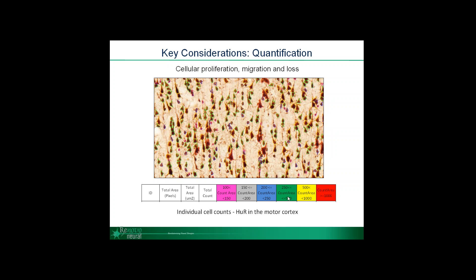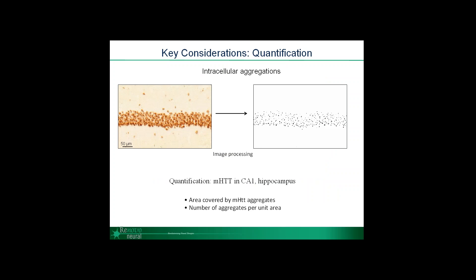What bin of cells is used for the analysis really depends on the questions being asked. On a cellular level, one of the pathophysiological hallmarks of many neurodegenerative diseases are intracellular aggregations, such as demonstrated in this example of huntingtin staining. Our process at Renovo whenever we are presented with an opportunity to work with a new stain is to work with both biological scientists and image analysis specialists to understand what challenges and what key features of a stain we can work with to provide the highest quality quantification possible.